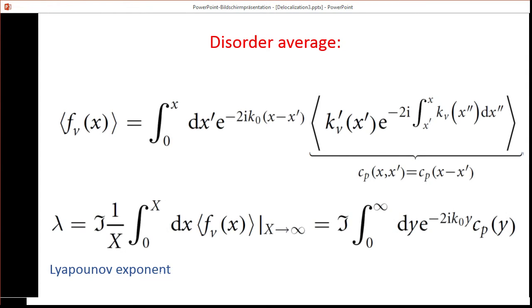We can evaluate this disorder average and obtain that the Lyapunov exponent is simply the imaginary part of an integral involving this new correlation function c_p(y).